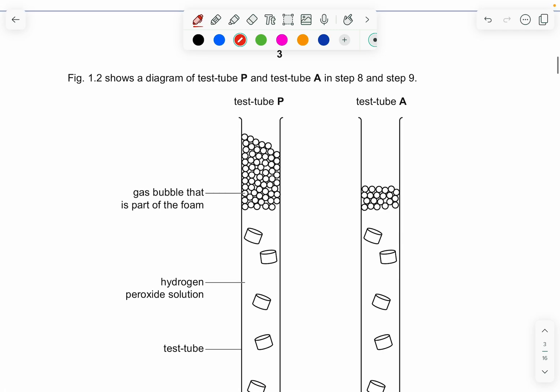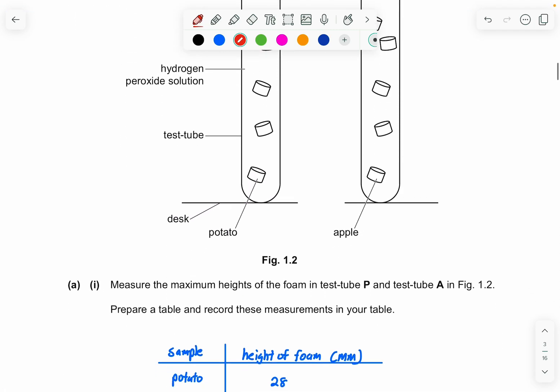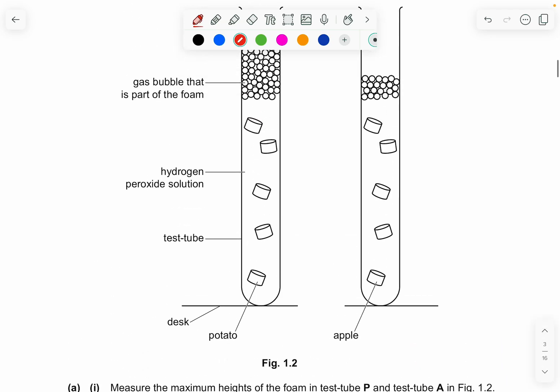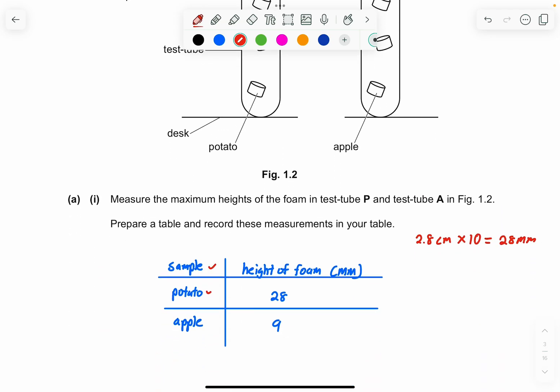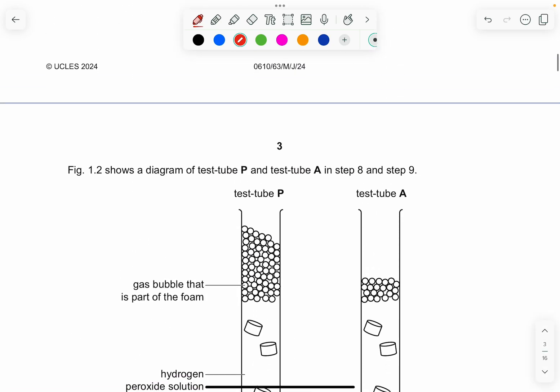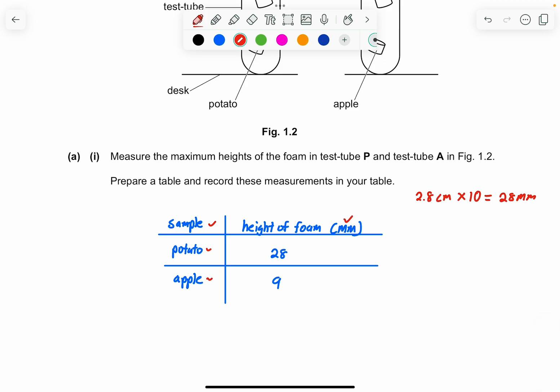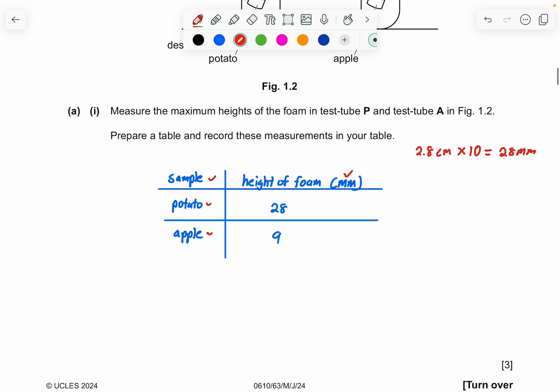So now they've given you the results of test tube P and test tube A in step eight and nine. And part one asks you to measure the maximum height of the foam in the test tube P and test tube A in figure 1.2. Prepare a table and record these measurements in your table. So it has to be in millimeter. So if your results in your ruler has given you 2.8 centimeter, make sure to times 10 to make it into 28 millimeters. So now we have the sample of potato and apple. So you write here sample and potato and apple. The height of the foam you measure. You can measure your ruler here. And then you can get your measurement. Same for this. And then your answers should be in millimeters. Make sure you have this unit in your table because this is also counted as some marks in them.